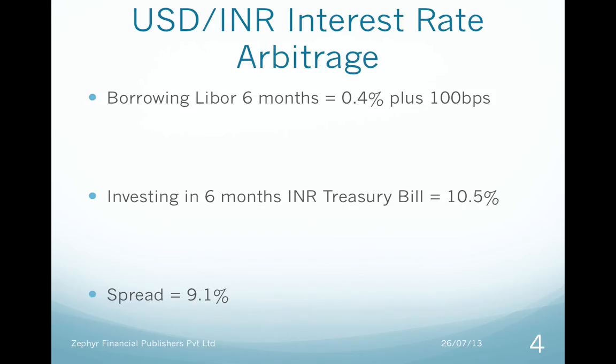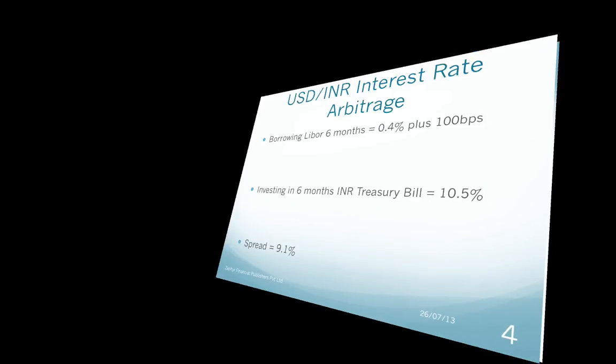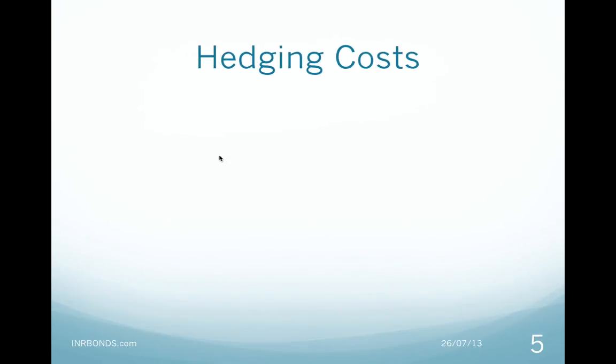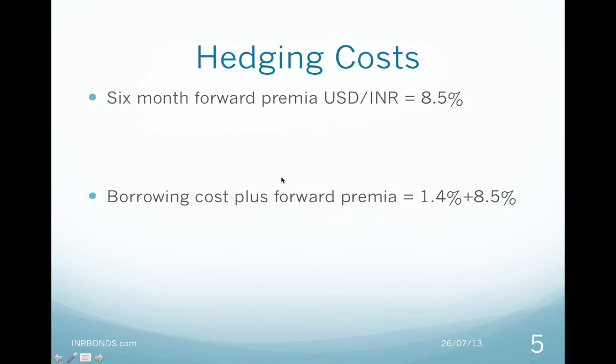If the FII now goes to the currency markets to hedge this currency risk, the 6-month forward premium is quoting at 8.5%.